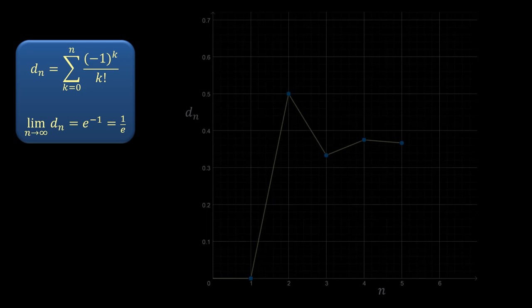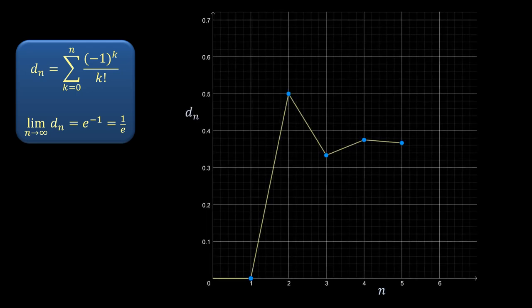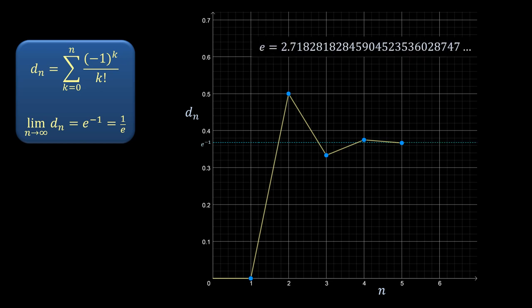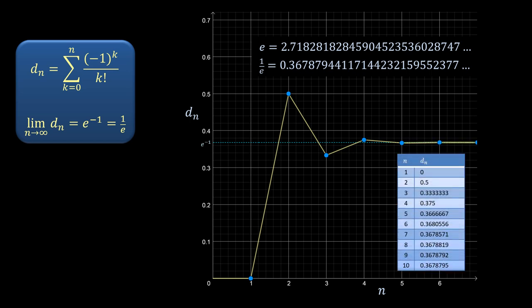Let's briefly return to the plot presented earlier and see how the obtained asymptotic value fits in. 1 over e has a decimal expansion of approximately 0.368. Adding in a few more data points illustrates how fast these values are closing in on the target.